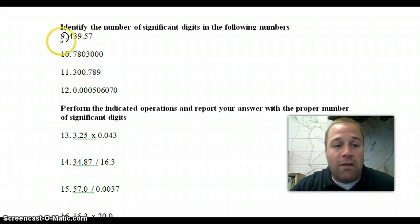So for the first number, and I apologize for the period, the first number is 439.57. There is a decimal point present, so we start on the left hand side. We go first thing other than zero is the 4. 1, 2, 3, 4, 5 significant digits. And again, significant digits just means the numbers that were measured.